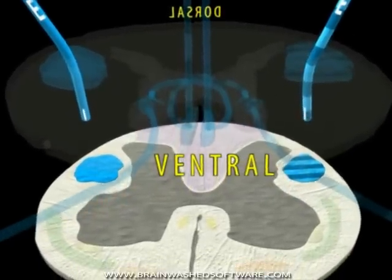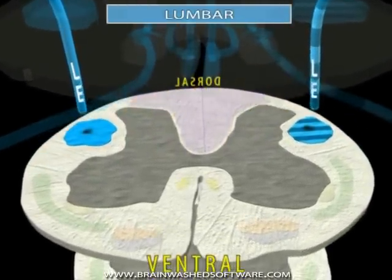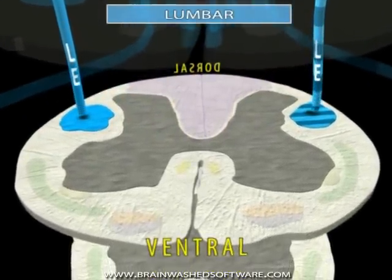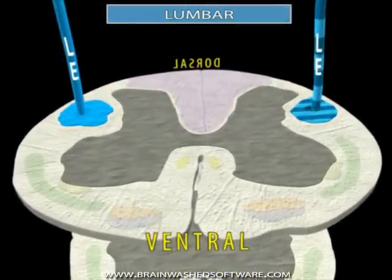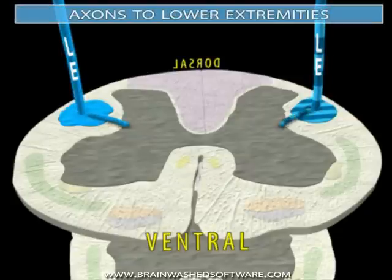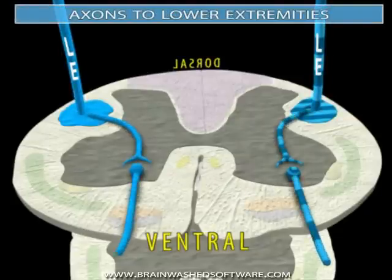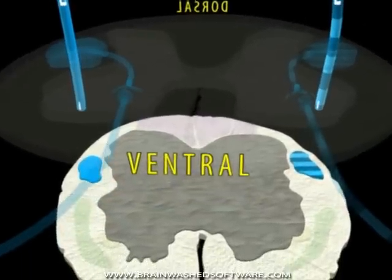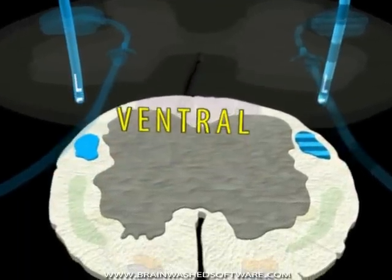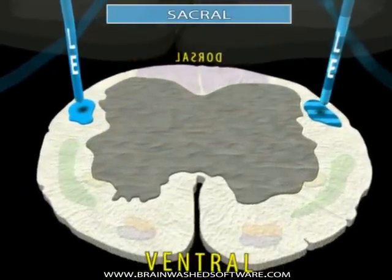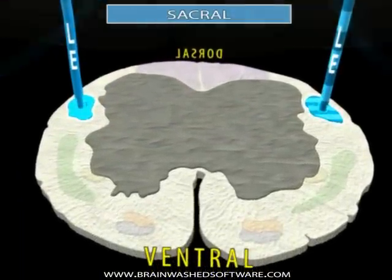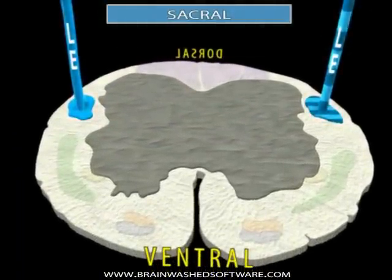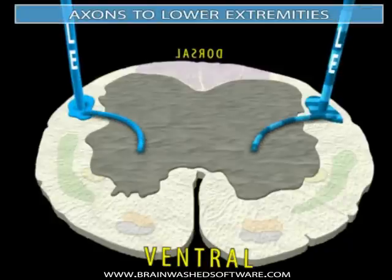As lumbar levels of the cord are reached, the tract becomes considerably smaller. Lower motor neurons at lumbar levels of the spinal cord innervate musculature of the thigh. Lower motor neurons at sacral levels of the spinal cord innervate musculature of the leg, ankle, and foot.